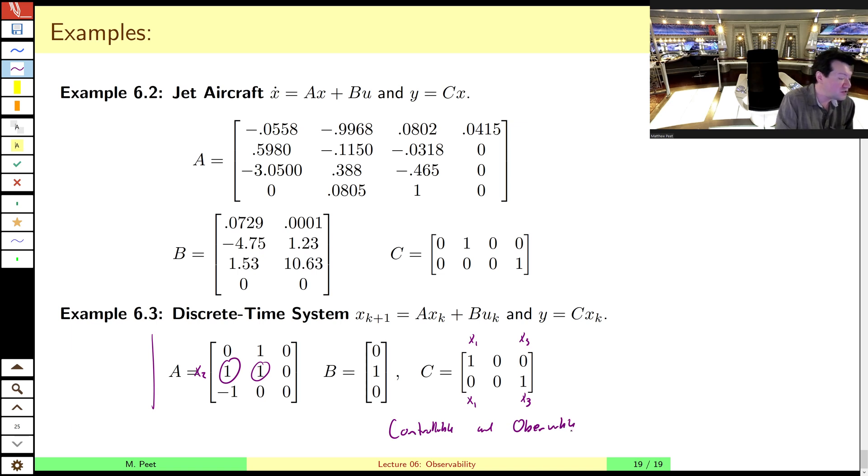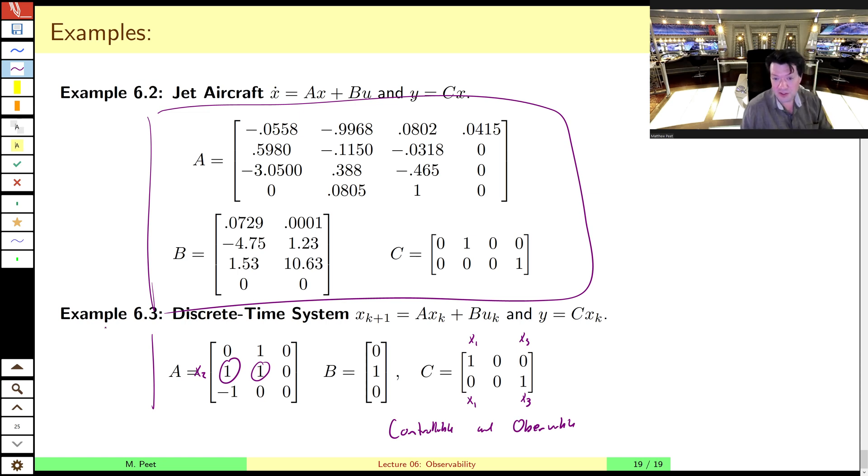And I leave it to you to determine if this jet aircraft model from Duan and Yu is similarly observable and controllable. So that wraps up our brief introduction to discrete time observers and wraps up this two lecture series on observability and controllability. And in the next lecture, we'll start getting ready for the problems of optimal control. And so I'll see you then.